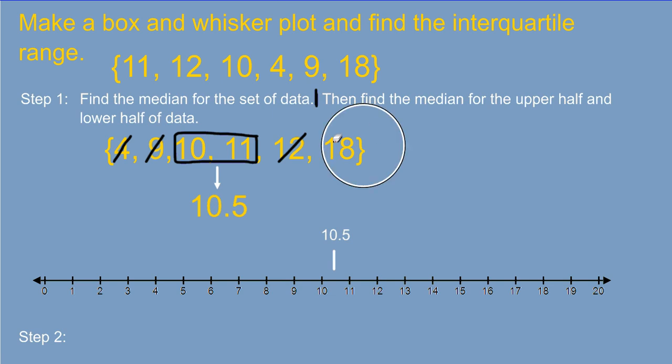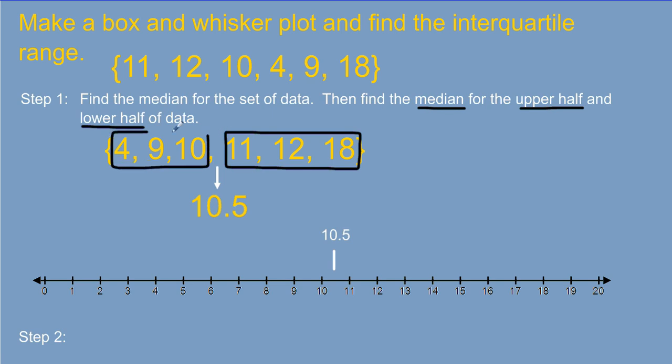The next thing we want to do is follow the directions up here, and it tells us then find the median of the upper half and the lower half of the data. So the upper half would be these three numbers because they're above the median, and the lower half would be these three numbers because they're below the median. If we're finding the median of the upper half, we end up with 12, and the median of the lower half, we end up with 9.